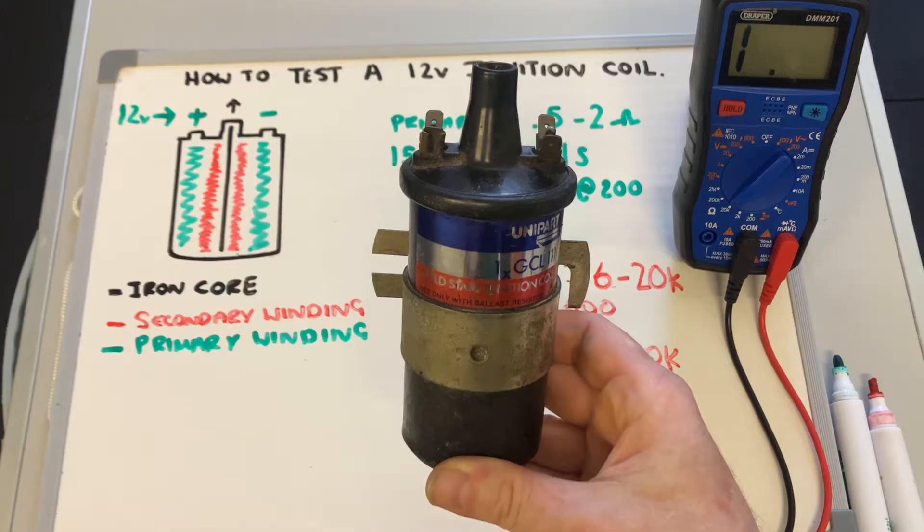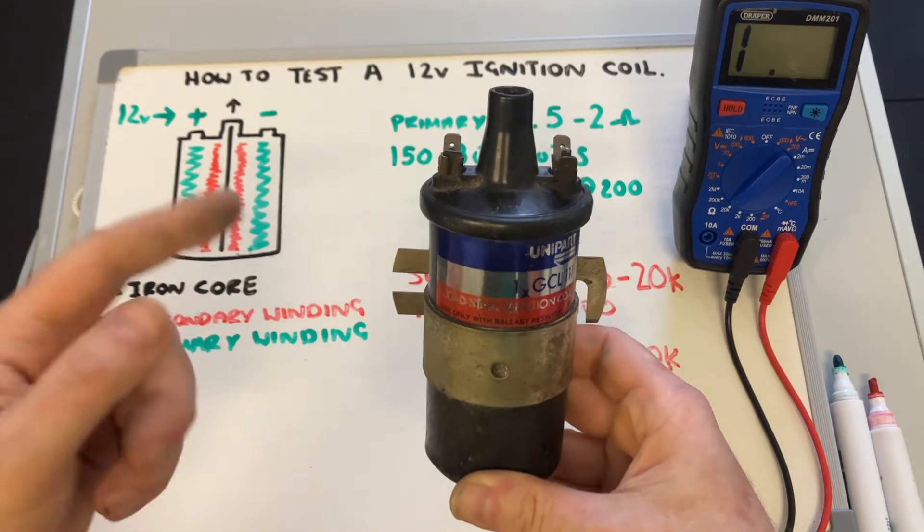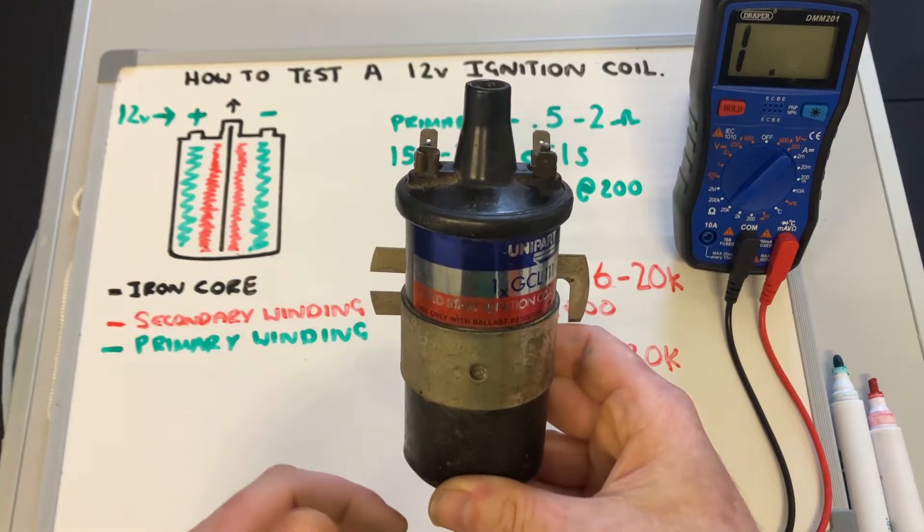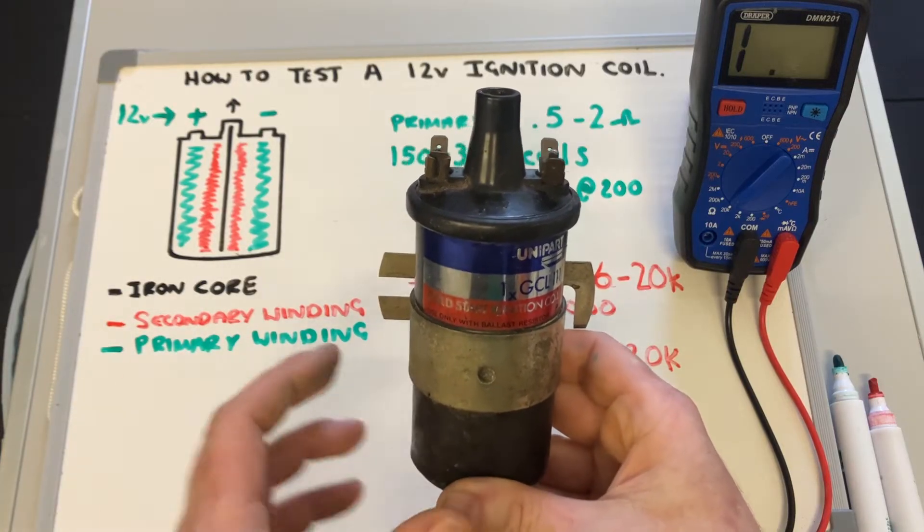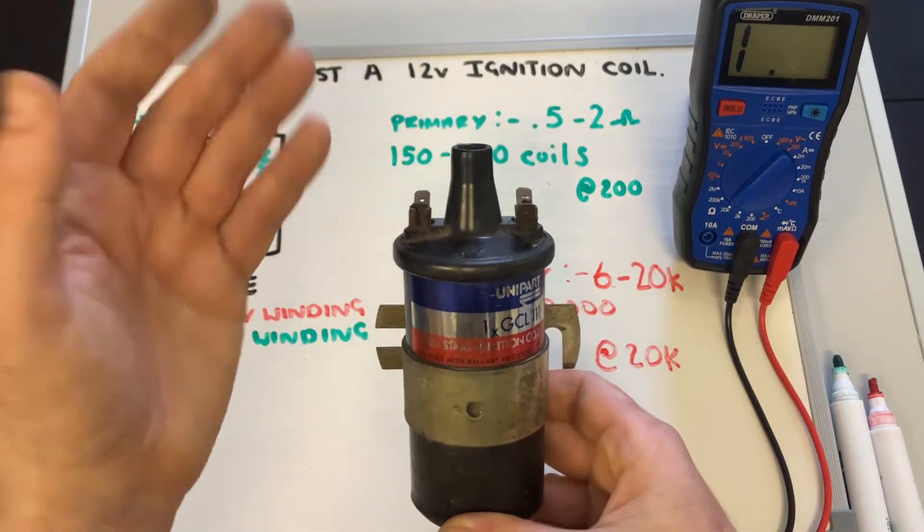So the primary coil itself will generate it up to about 200 volts, and then that induction across to the secondary winding, which is a lot tighter so it's creating a much bigger electromagnetic field, boosts it up to the 20,000. So it's about 10 times increase between the primary and the secondary winding, and then off it goes to the distributor.